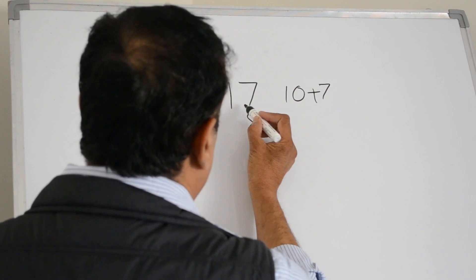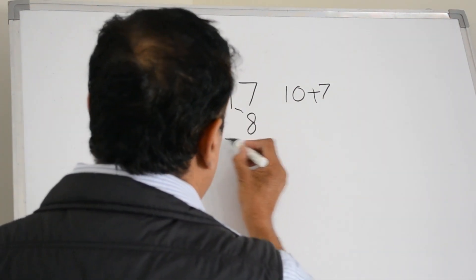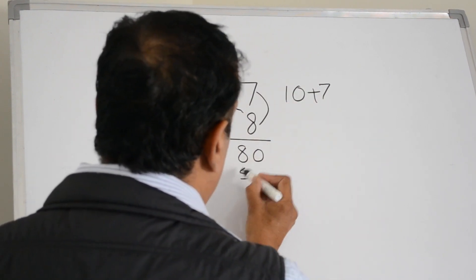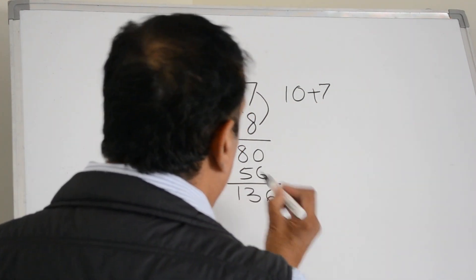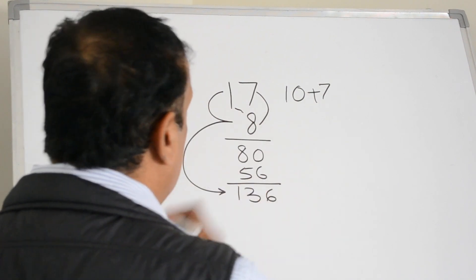So in this 17, this is 10, this is 7. Multiplying 10 by 8 getting 80, multiplying 7 by 8 getting 56, add it up and it comes out to be 136. So 17 eights are 136.